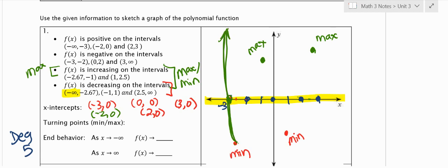I also see here that it's decreasing on positive infinity as well. So when I go from 2.5, which is a max, all the way down through here, it's going to also be decreasing.